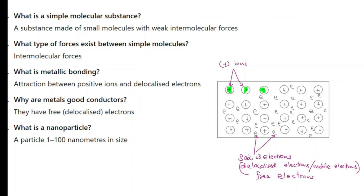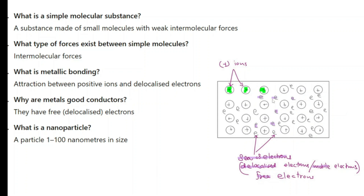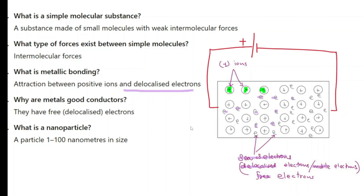What is metallic bonding? In metals we have positively charged ions and free electrons that are able to move through the structure — we call them the sea of electrons or delocalized electrons, also called mobile or free electrons. This attraction between positive ions and delocalized electrons is what you call metallic bonding, and this explains why metals are good conductors. If you connect a metal to a power supply, these electrons will start to move towards the positive terminal.